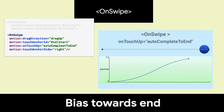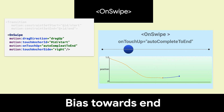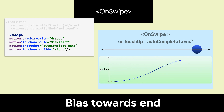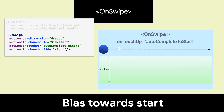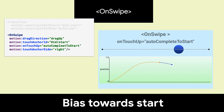Sometimes you want the motion to prefer the start or the end. This can be useful if you don't want to reduce the chance of accidentally going the other way. We also have AutoComplete to start, which can be useful when you're simulating lifting something, which would naturally want to fall back down.